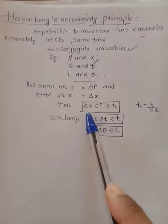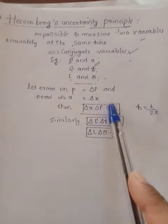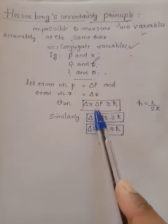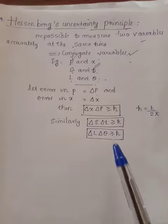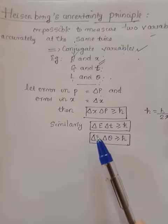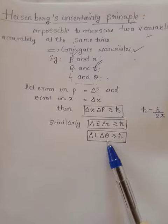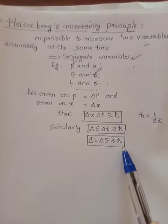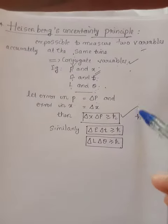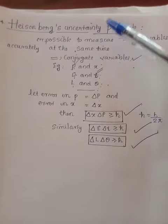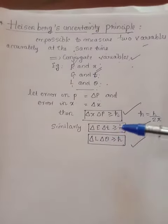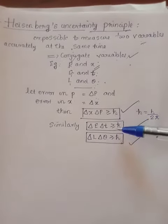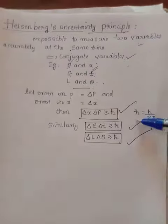When we find the product of delta x and delta p, that value will always be greater than or equal to h-bar. Similarly, for energy and time: delta E times delta t is greater than or equal to h-bar. For angular momentum and angular displacement: delta L times delta theta is greater than or equal to h-bar. These three equations are the mathematical representation of the Heisenberg uncertainty principle. Here, h-bar, also known as h-cross, is equal to h divided by 2 pi.